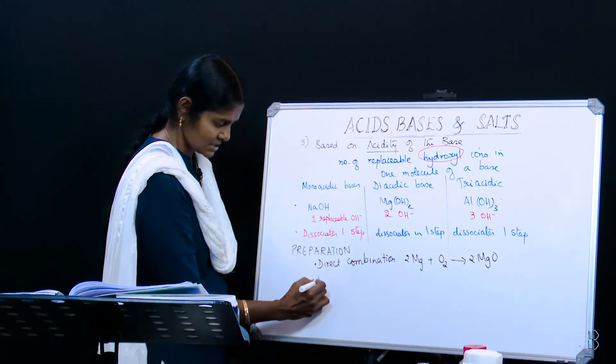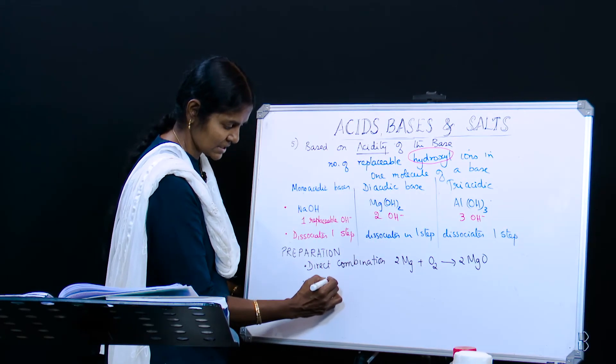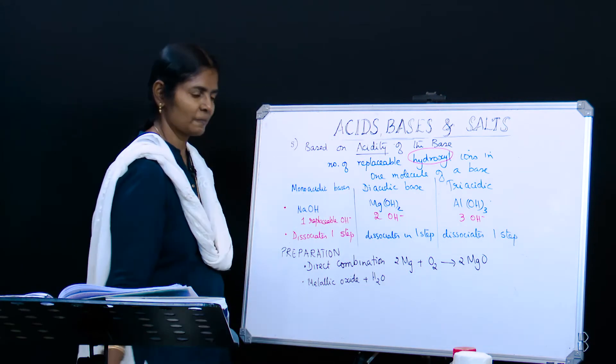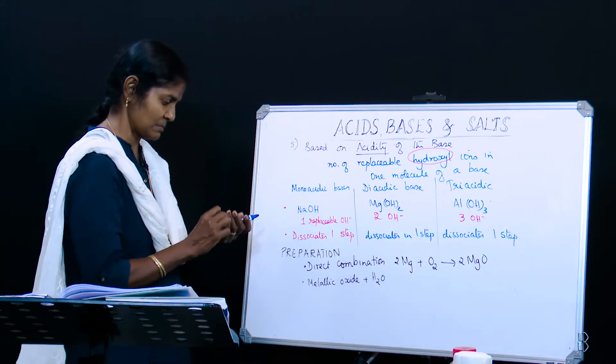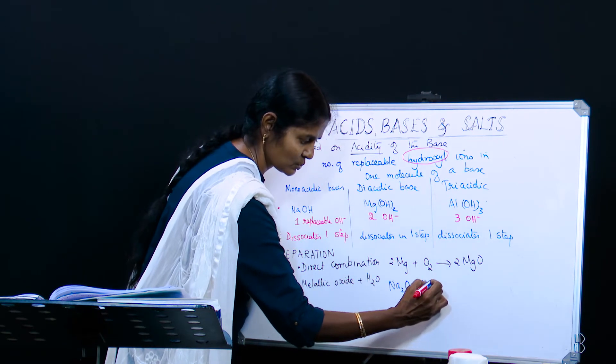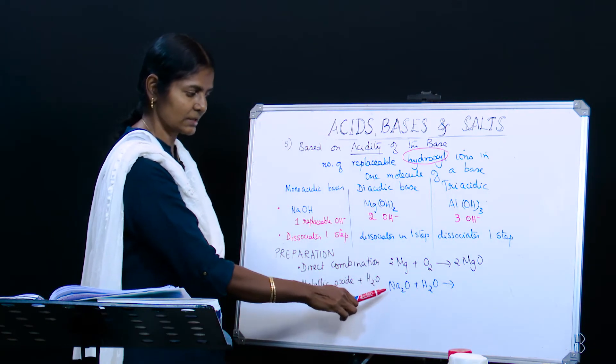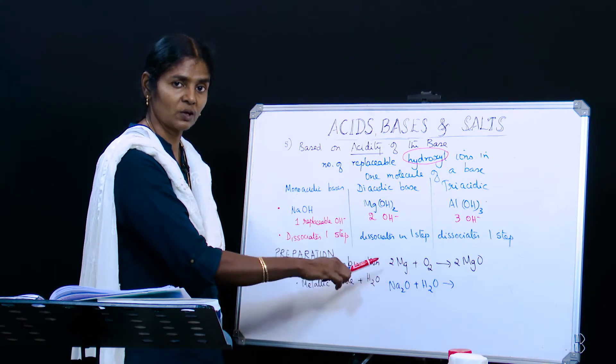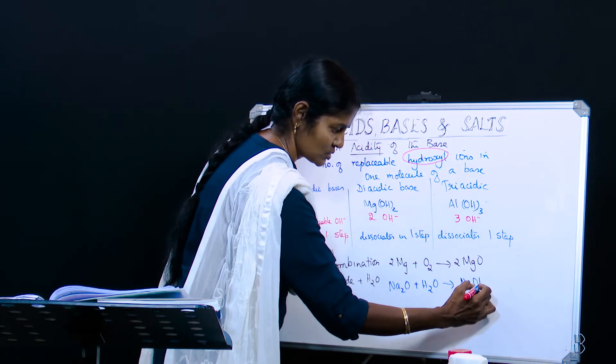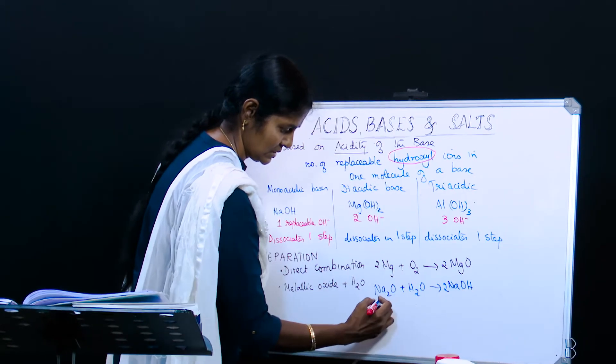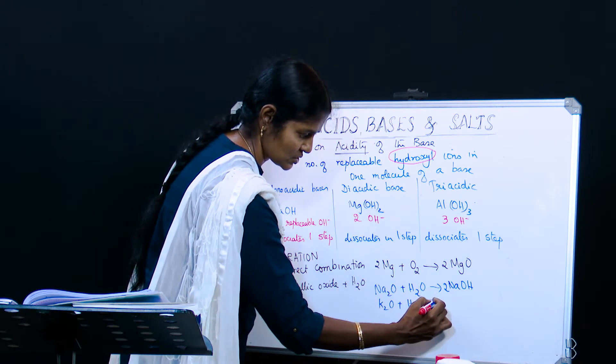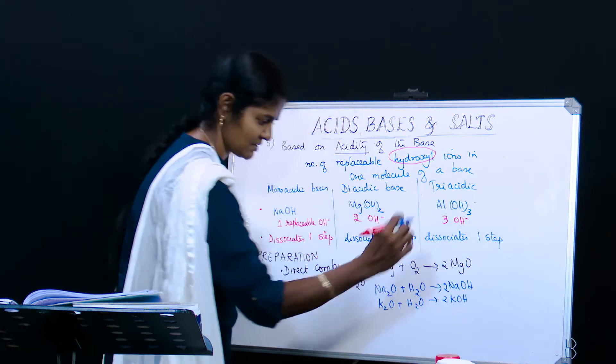The second method is we take metallic oxides. When water is added to this, this also can give us a base. For example, if we take sodium oxide when reacting with water - why would this react? This is an alkali. Anything to do with sodium oxide and hydroxide are soluble in water. So they dissolve easily to give you sodium hydroxide. Same thing happens with potassium oxide - this also reacts to give potassium hydroxide.